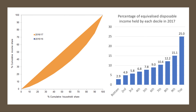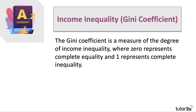Looking at the same data differently: the bottom 10% of households get just under 3% of disposable income, the next poorest 10% get only 5%, and so on. The first six deciles each get less than 10% — whereas if income were equal they'd all get 10%. The top decile — the richest 10% — get 25% of disposable income even after tax, taking a quarter of all income in the economy. One way of measuring income inequality is the Gini coefficient — a measure of the degree of income inequality where zero represents complete equality and one represents complete inequality.